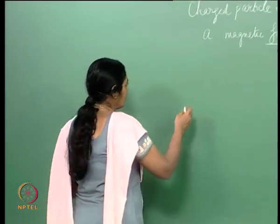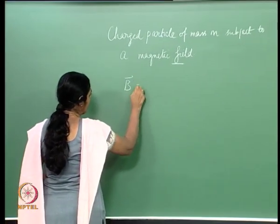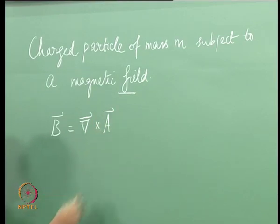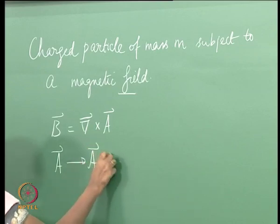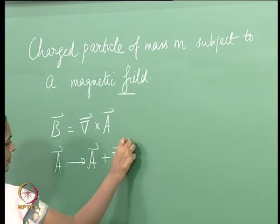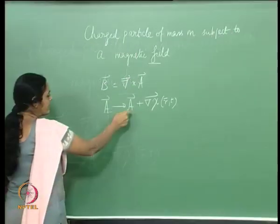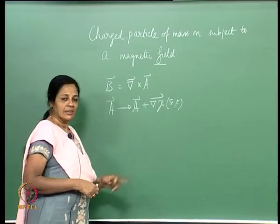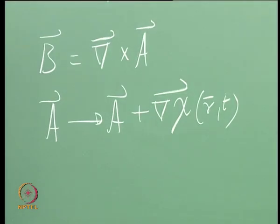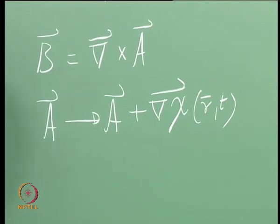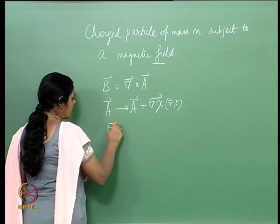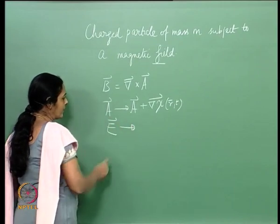First of all, the magnetic field B itself can be written in terms of the vector potential as del cross A, where A is the vector potential. I said that if I did a gauge transformation where A changed to A plus grad chi, it simply does not change B. So this is an example of a gauge transformation. In fact, the full set of transformations are best understood if we look at the electric field as well.